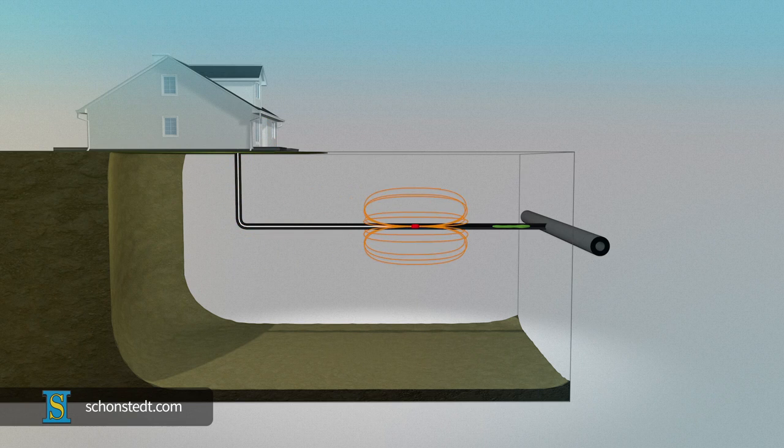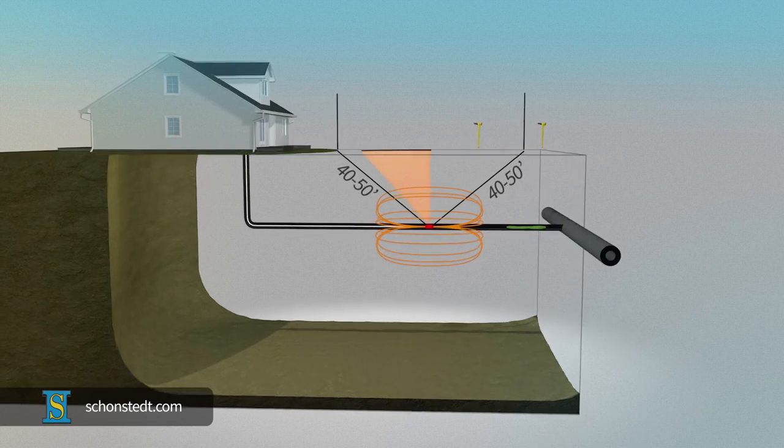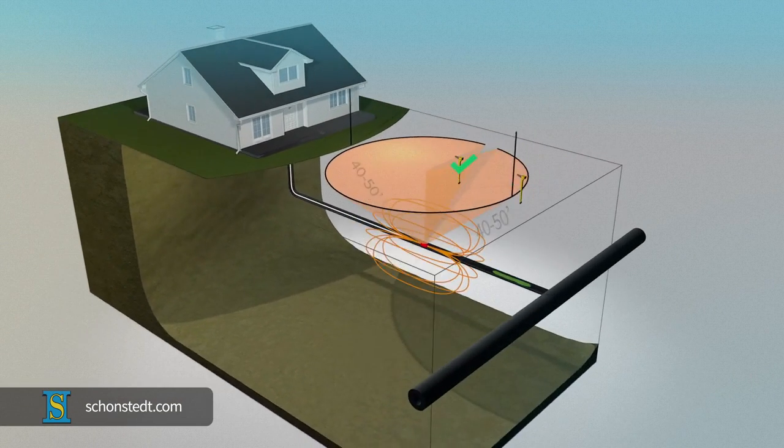Otherwise, locating it can be extremely difficult. As a rule, you must be within a distance of 40 to 50 feet from the sonde to be able to pick up its signal.